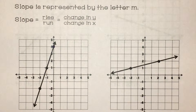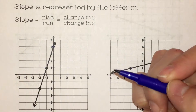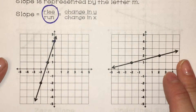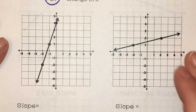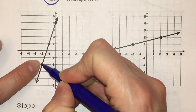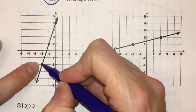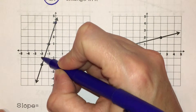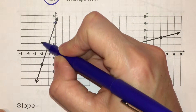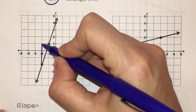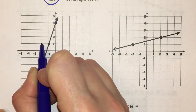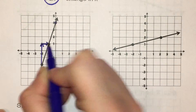You're finding the slope between any two points on your straight line. We're going to use rise over run to find the slope. I like to start at my bottom most point, and I'm going to rise until I am parallel with my other point — going straight up along the coordinate grid until I'm parallel with my other point. See, my other point's right here, so I'm parallel to it, and I can run over to that point.